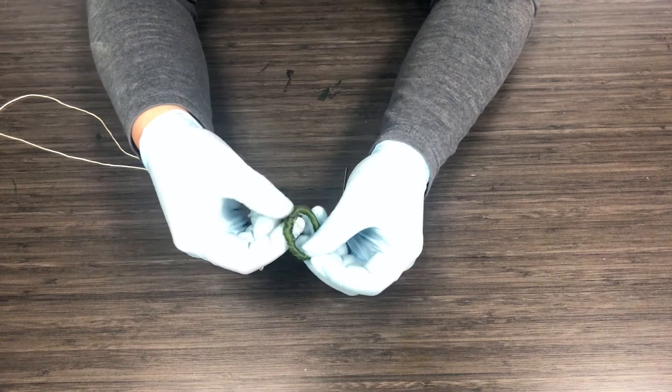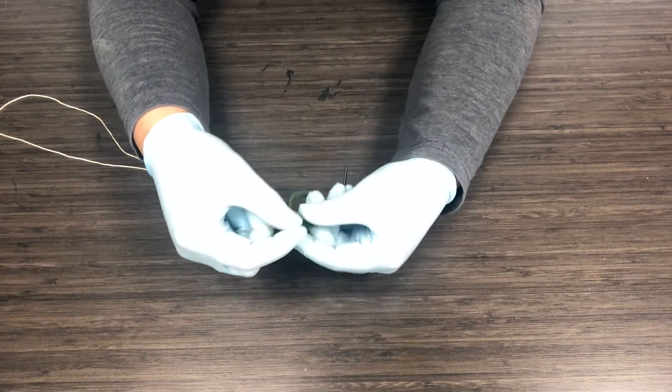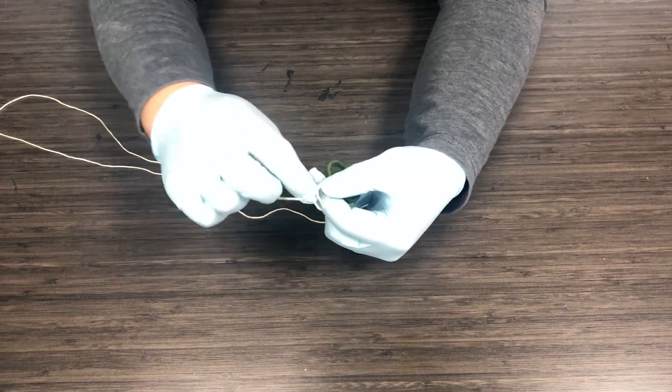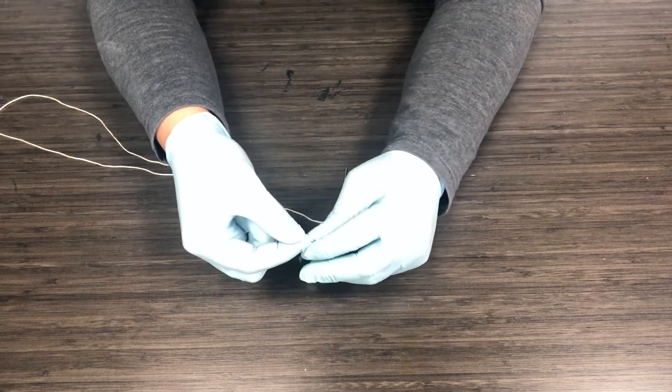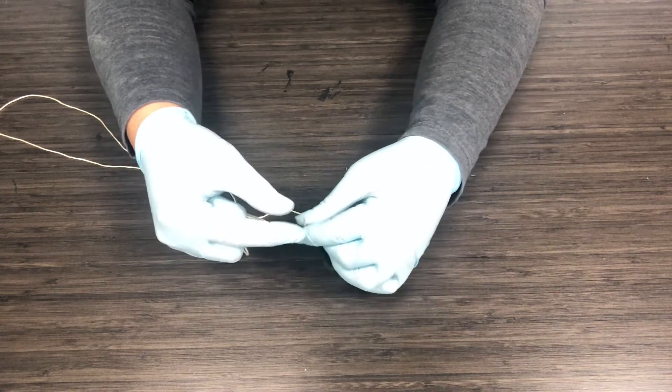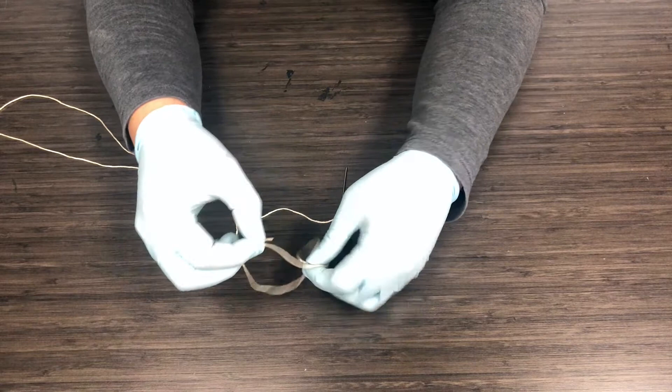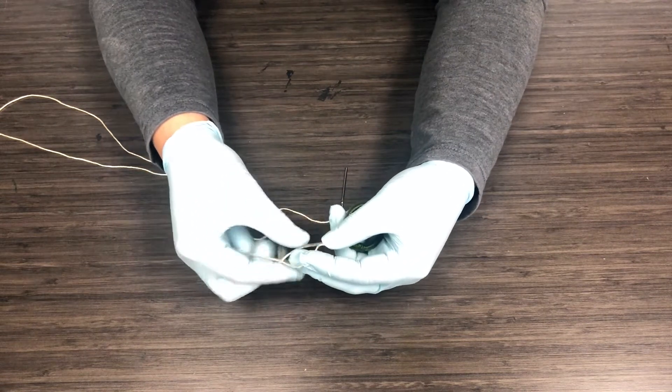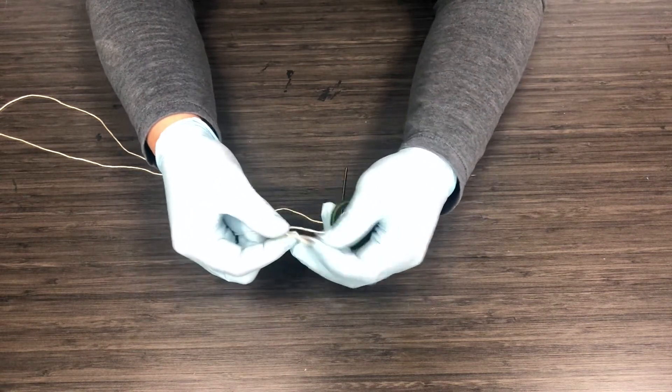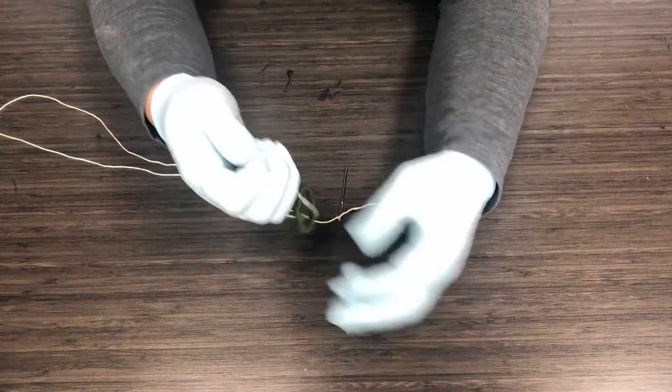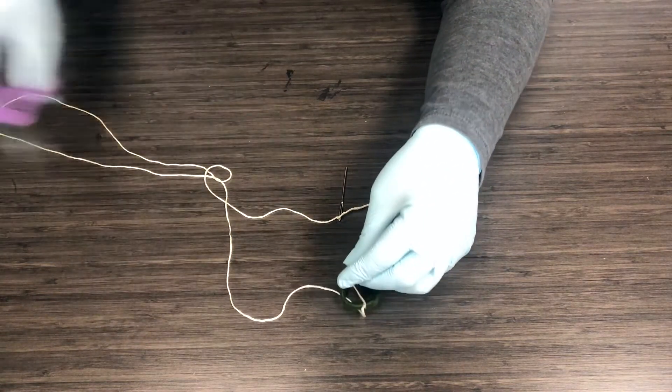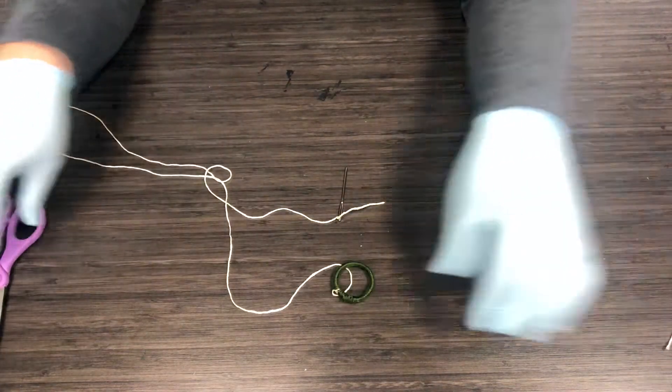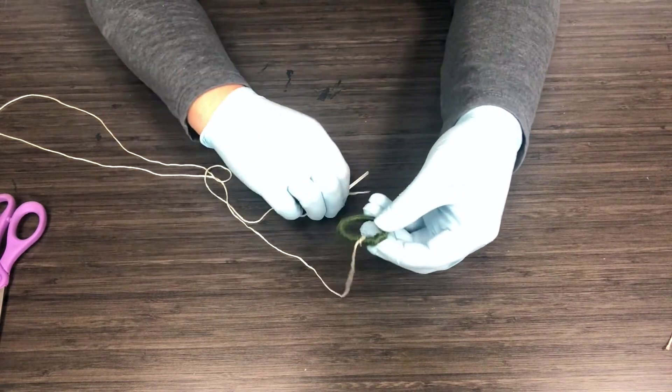Okay, the first step is to take the end without the needle and tie it on to your dream catcher. Double knot. There you go. I'm going to trim off that edge. I can trim it a little bit better later if I'd like.